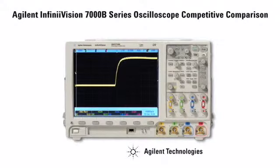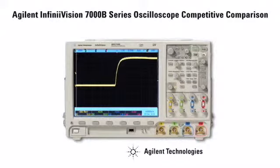Fast debug requires quickly finding infrequent events. In this product comparison, we're measuring a pulse train that has a glitch occurring once every 40,000 cycles.